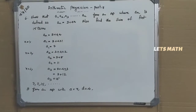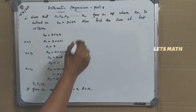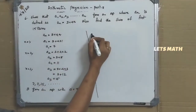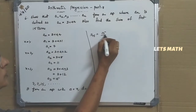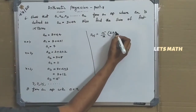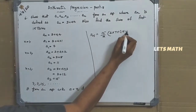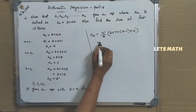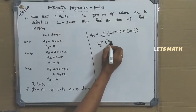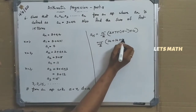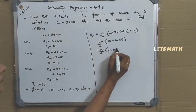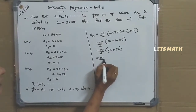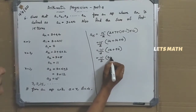To find S15, we use SN equal to N by 2 into 2A plus N minus 1 into D. S15 equals 15 by 2 into 2 into 7 plus 14 into 4, that is 15 by 2 into 14 plus 56, giving 15 by 2 into 70, which is 15 into 35 equal to 525.